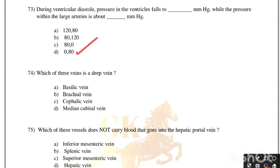Which of these veins is a deep vein? Basilic vein, brachial vein, cephalic vein, or median cubital vein. Correct answer is option B, brachial vein is a deep vein.